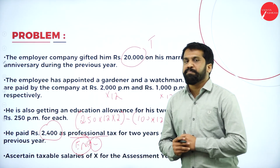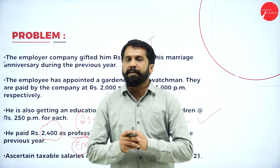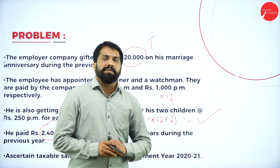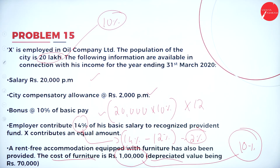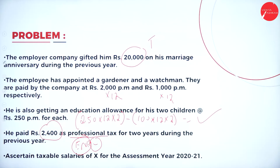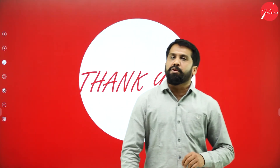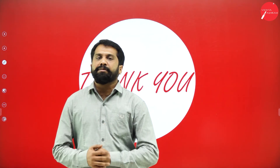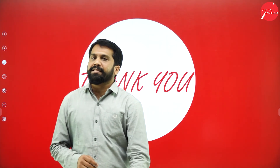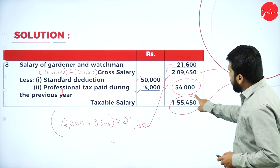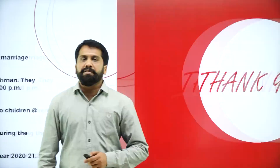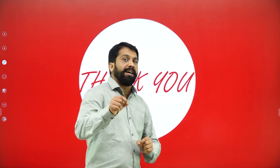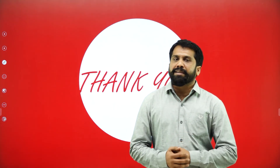This problem number 15 will be your homework. The concept is very simple. First, take a screenshot of the problem slides. Then solve it yourself. Your final answer — the taxable salary for problem 12 — is 1,55,450. For problem number 15, solve it and write your final taxable salary answer in the comment box.